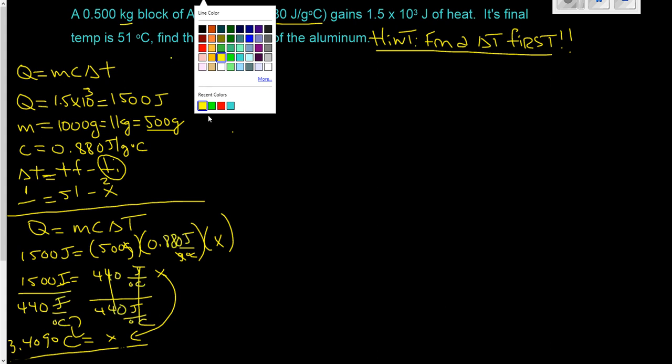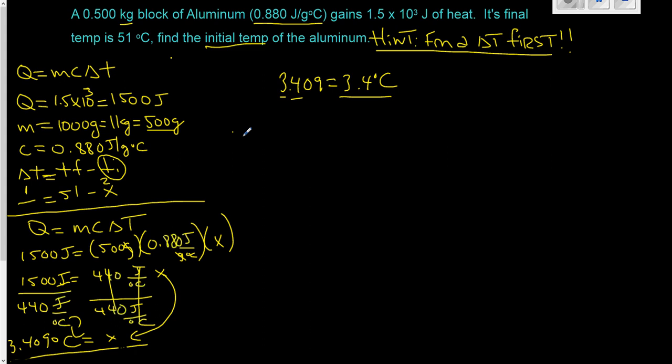We have to fix this so that we have, we can represent this showing the proper number of significant digits. So let's have a look. We have 3 significant digits here. This is 0.880, so there'll be 3 there. There's 2 significant digits here, and there's 2 significant digits here. So we're going to have 3.409. Using our rules for significant digits with 2 significant digits, we would represent it like that. And 3.4, that is our delta T.